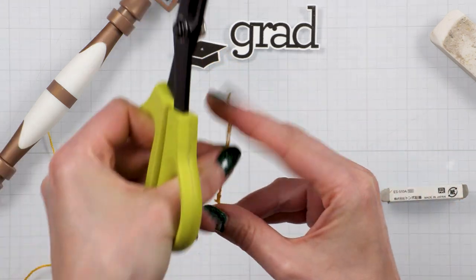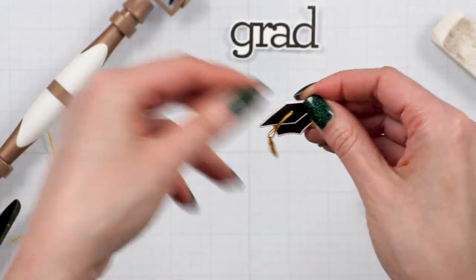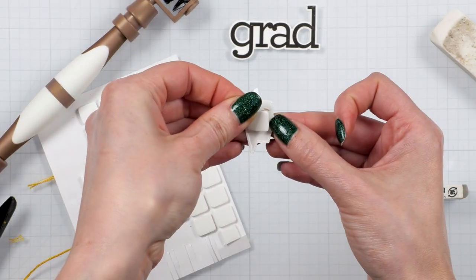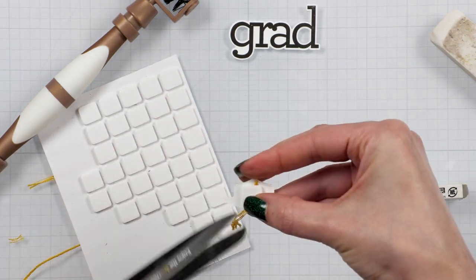We just need to thread it through the hole in our graduation cap and secure the end from the inside with a foam square. I trimmed the excess thread too just so that I don't have any poking from behind the cap. And there you have it!